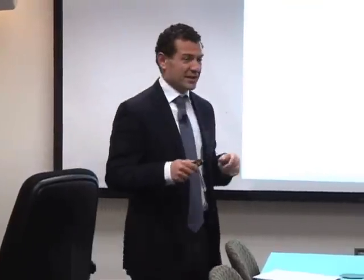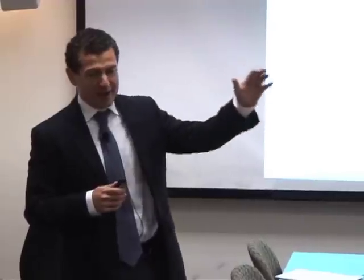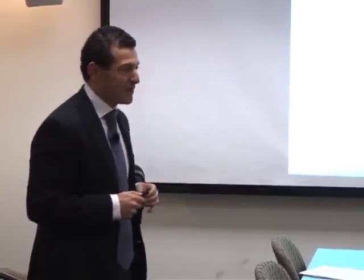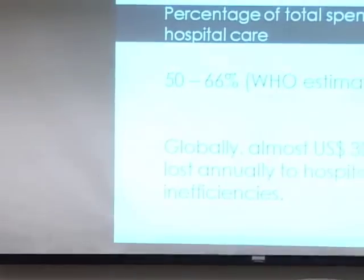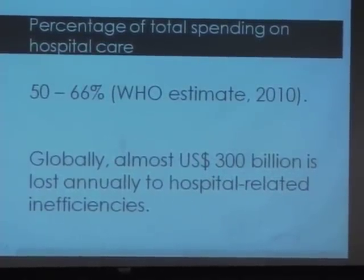A lot of talk goes into development assistance for health, which is about $14 billion a year total. Worldwide, donors of all kinds — private sector, governments, Gates Foundation, everyone — put in about $14 billion a year. How much money is wasted through hospital inefficiency worldwide? It's about $300 billion a year wasted just through hospital inefficiency. By improving that system, we'd do far more good than by increasing development assistance commitments.